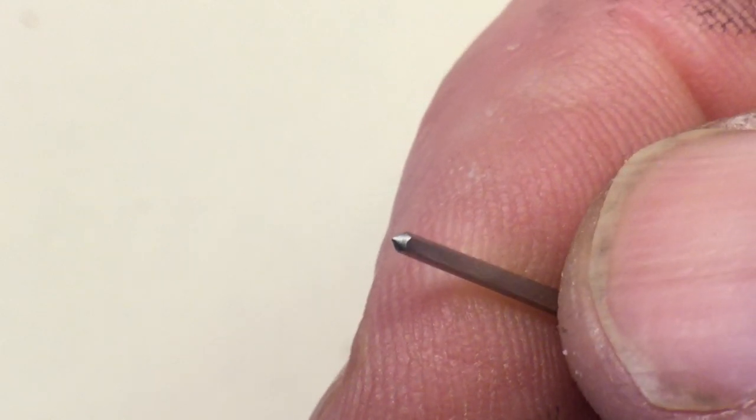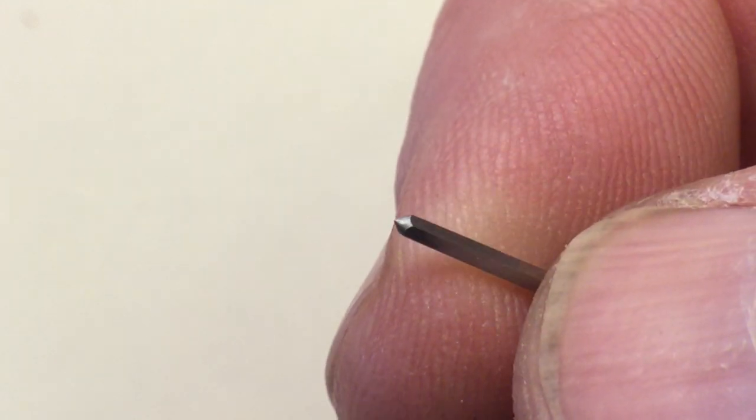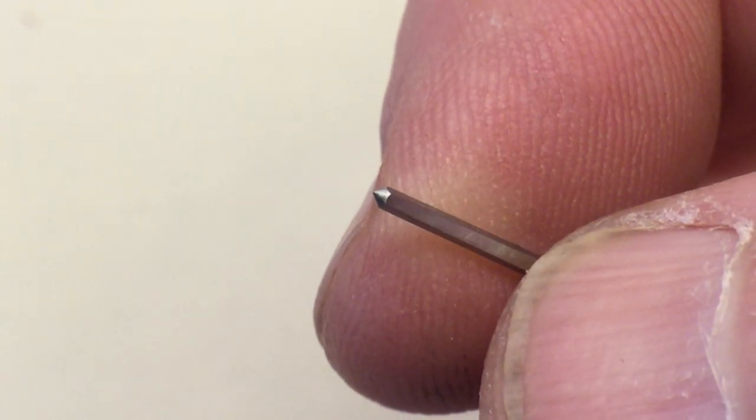The icing on the cake would be to harden and temper it, possibly somewhere in the deep straw colour, but that's pushing my skill set at this time.